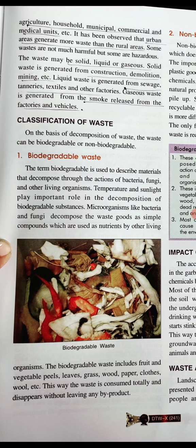Waste can be classified into two types: biodegradable and non-biodegradable. Biodegradable waste is material that can be decomposed through the action of bacteria, fungi, and other living organisms. Temperature and sunlight also play an important role in the decomposition of biodegradable substances. Microorganisms like bacteria and fungi decompose waste into simple compounds used as nutrients by other organisms. Decomposition is the process of breaking down complex substances into simpler ones that can mix with the soil.